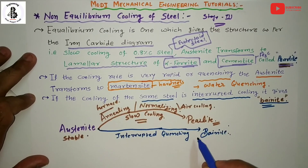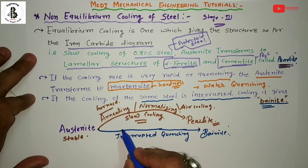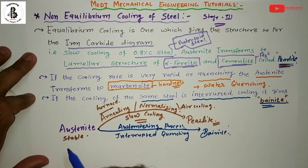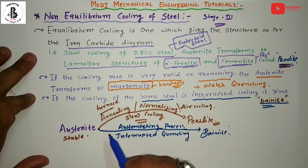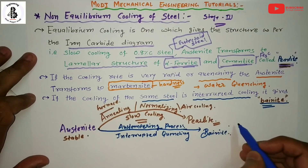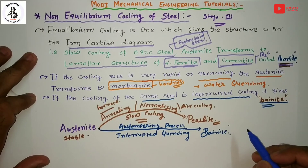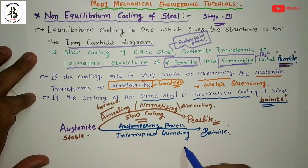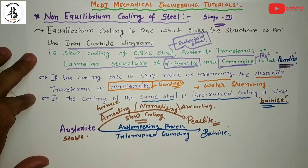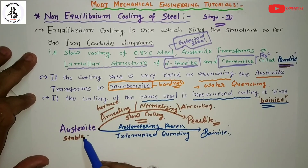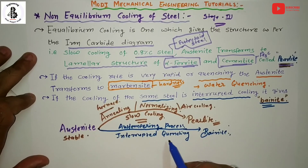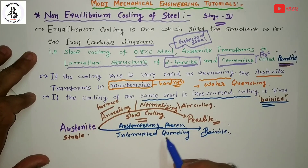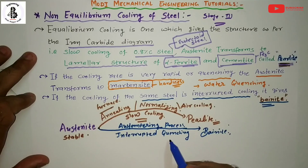According to the heat treatment process, this is known as the austempering process. In austempering, the austenite is first rapidly cooled, then held for some time, then slowly cooled to form a bainite structure. For details on various cooling curves in heat treatment, see the description box. In general, for non-equilibrium cooling, the austenite phase through the austempering process — or interrupted quenching (initially rapid cooling then slow cooling) — results in the formation of bainitic structure.